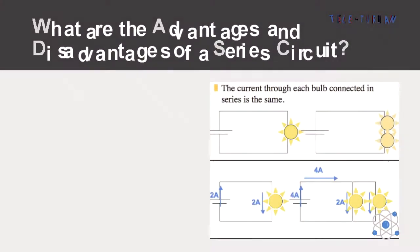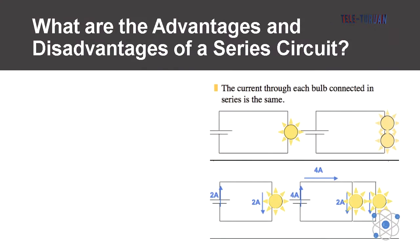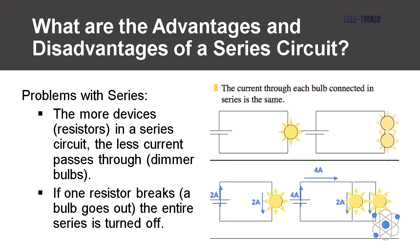What are the advantages and disadvantages of a series circuit? Problems with series circuit: the more devices or resistors in a series circuit, the less current passes through or it produces dimmer bulbs. If one resistor breaks, a bulb goes out, the entire series is turned off.